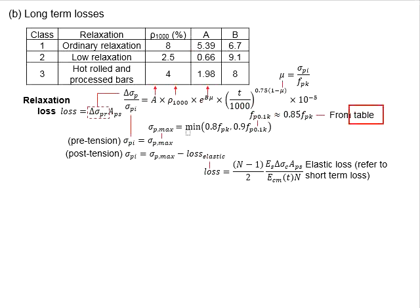If the prestress member is a post-tension member, the σpi will have to minus with the losses due to the elastic. This elastic loss is a short-term loss for the post-tension member, and it is only applicable for the tendon being stressed successively.